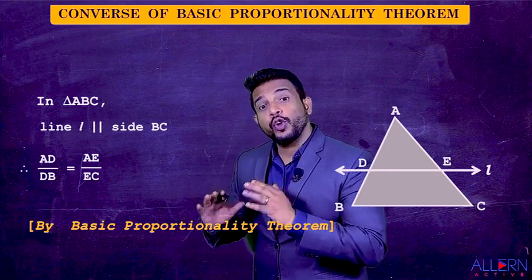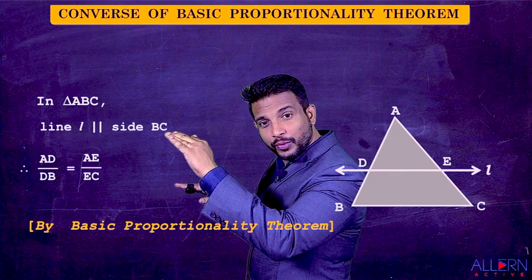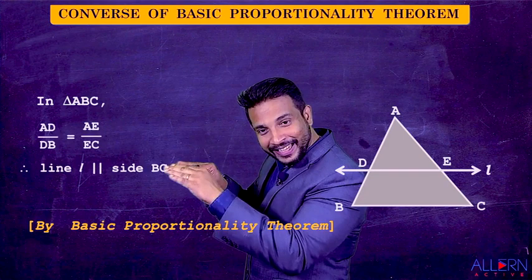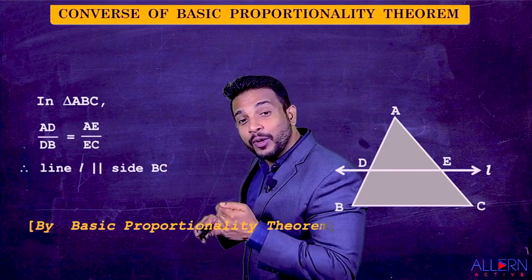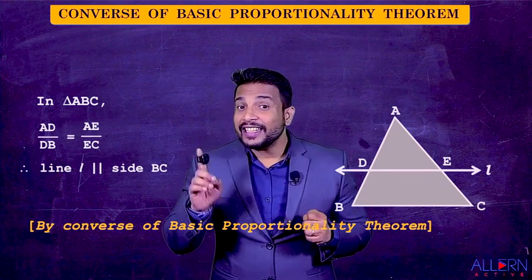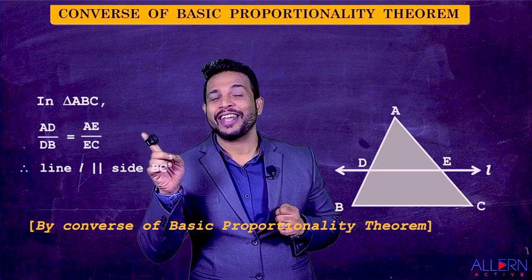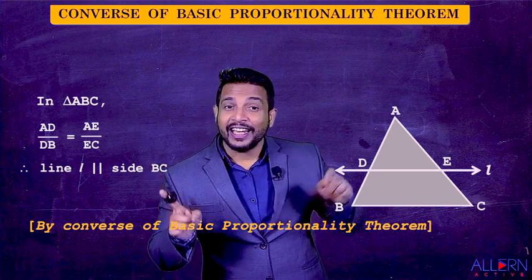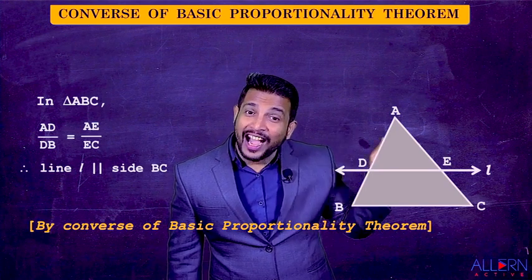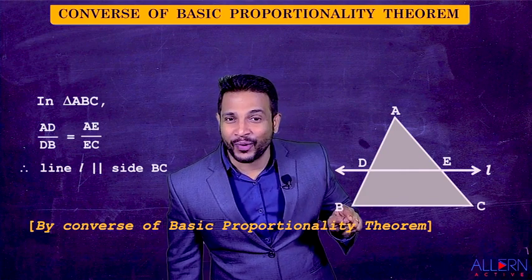We had learned that in the basic theorem. Now we are learning the converse. In the converse, the given and the proof swap their places. So when we swap their places, we get the converse of the Basic Proportionality Theorem. It says that in a triangle, when these ratios are equal, then this line is parallel to side BC — that is the converse.